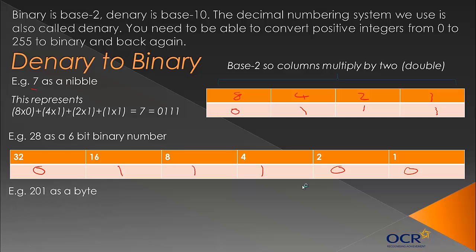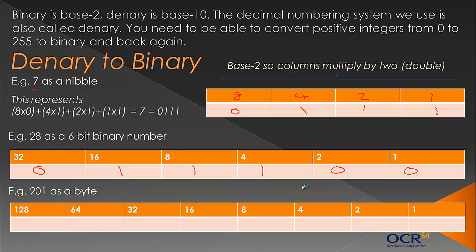Now let's do a harder one — representing 201 as a byte. A byte is 8 bits, so we do 8 columns, extending the column headings further to 64 and 128. This is my method — there are lots of methods. If you don't understand this, I'd recommend looking at other YouTube videos; maths teachers are really good at explaining this sort of thing. But hopefully this is useful.